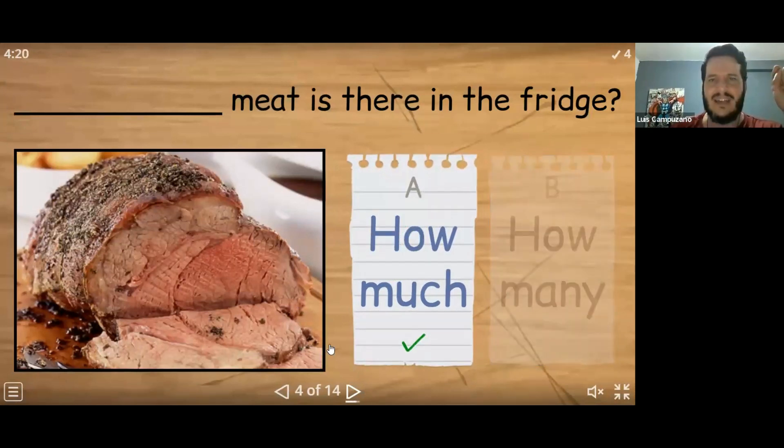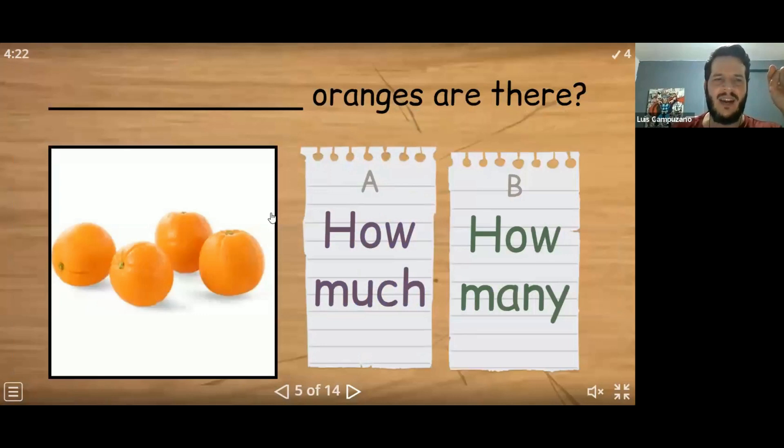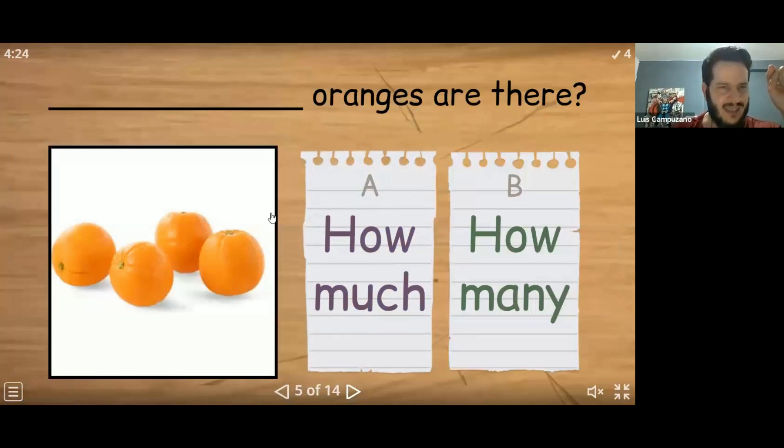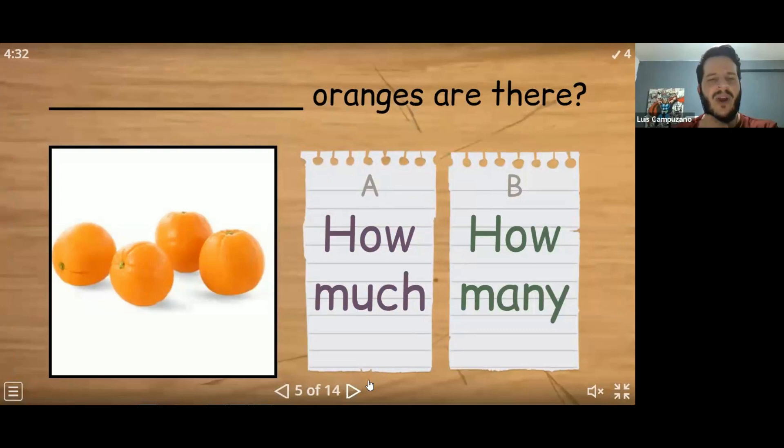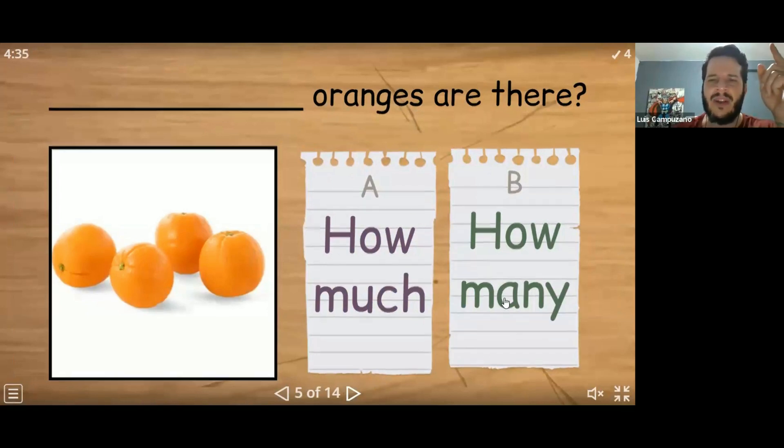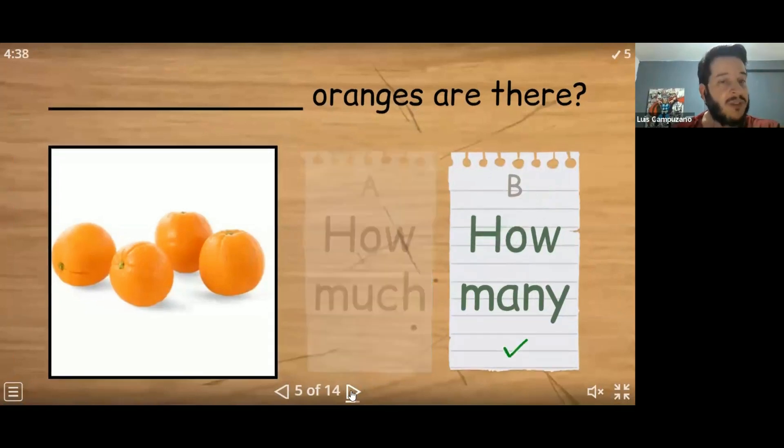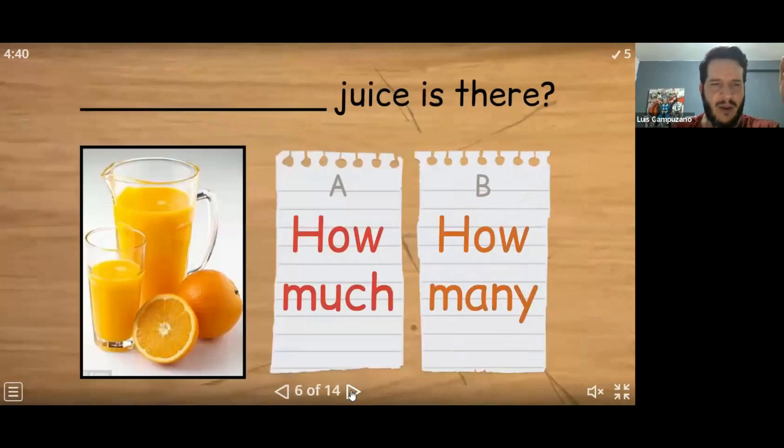The next question is going to be for Stephanie. Stephanie, what do we say here? How do we complete this sentence, Stephanie? How many oranges are there? Are there? Very good. How many oranges are there is correct. Very good. Because we can count the oranges. We can count the oranges, right? One, two, three, four, five. Good job, Steph.